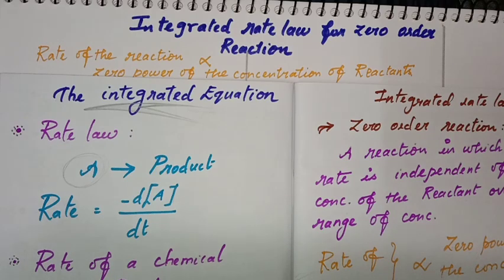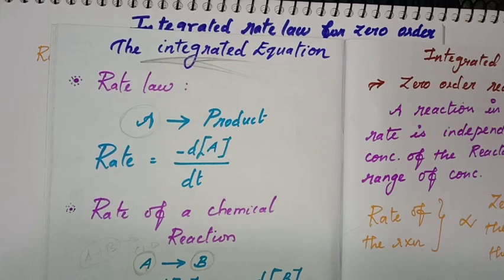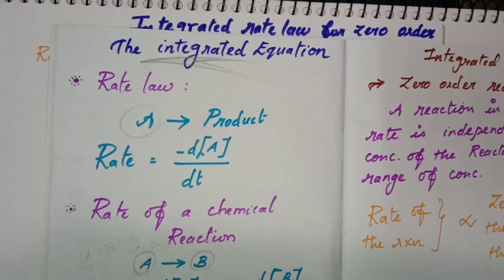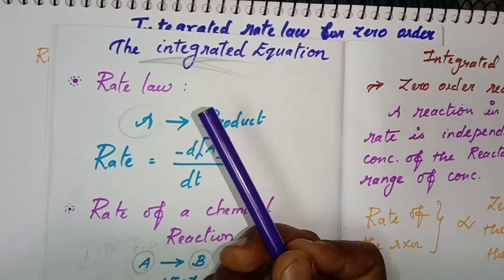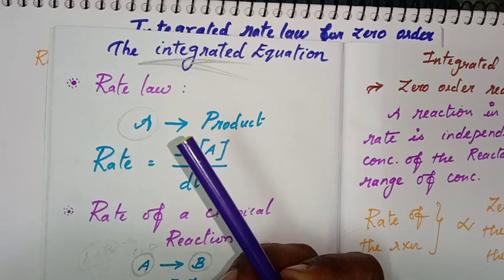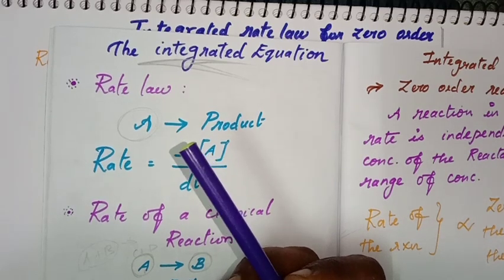First, let's look at rate law. Rate law is a mathematical relationship comparing reaction rates with reactant concentration. The reaction order is the sum of the concentration term exponents in the rate law equation — for example, rate equals k times concentration of A to the power m times concentration of B to the power n.